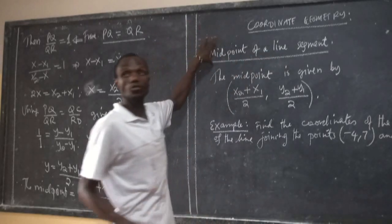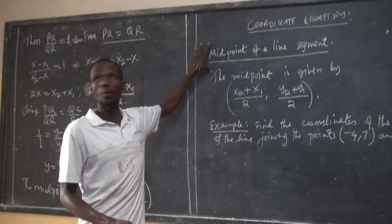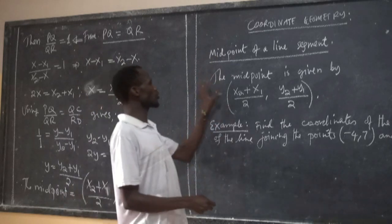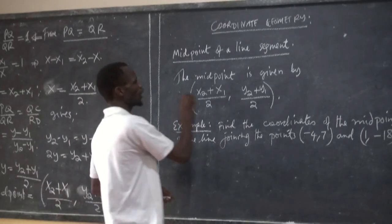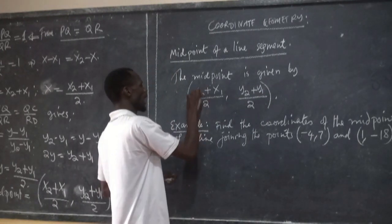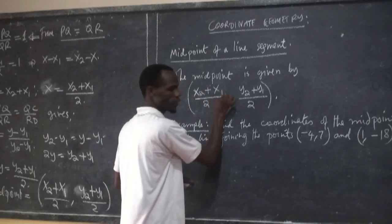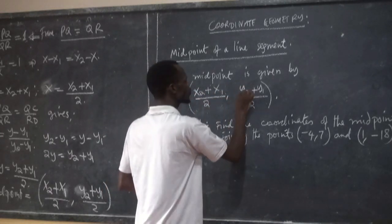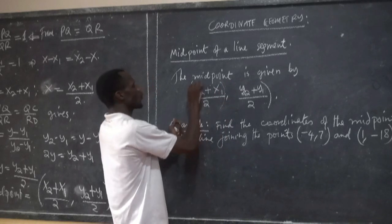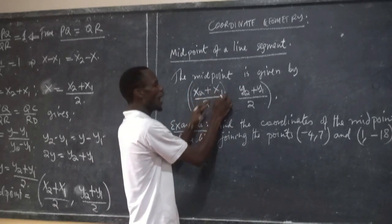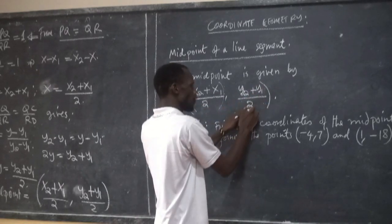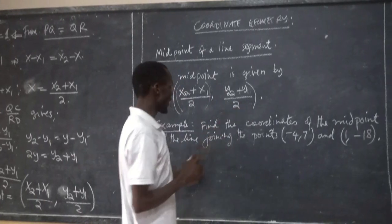Now we are going to find the midpoint of a line segment. The midpoint of a line segment is given by this formula: X is X2 plus X1 over 2, and Y is Y2 plus Y1 over 2. So X is obtained by taking X2 plus X1 over 2, and Y is obtained by taking Y2 plus Y1 over 2.